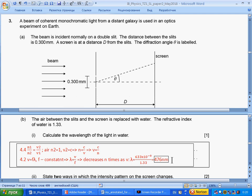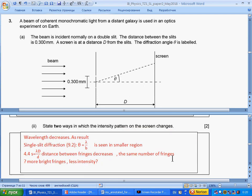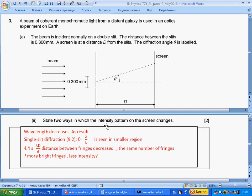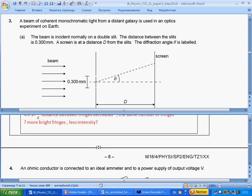State two ways in which the intensity pattern on the screen changes. Wavelength decreases. As result, single-slit diffraction is seen in smaller region. From 4.4, the fringes are closer to each other. As we have more fringes, the intensity of each decreases.